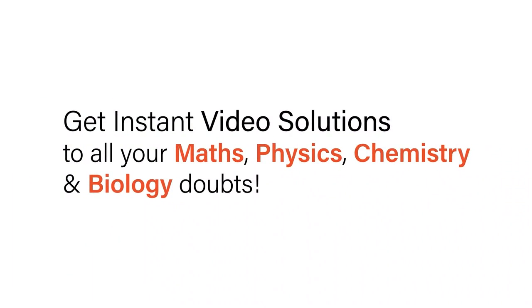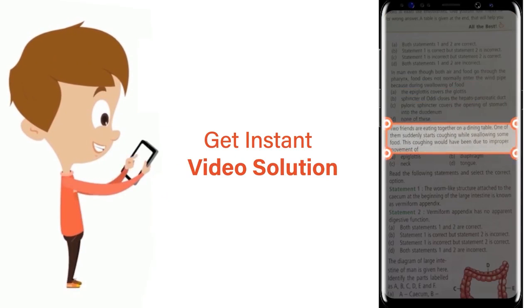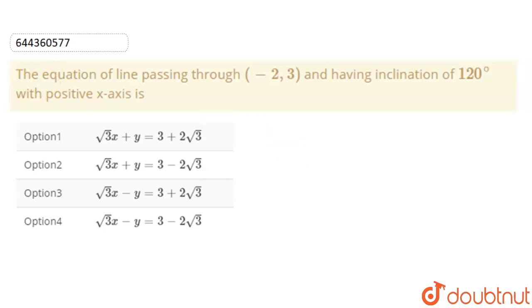With Doubtnet, get instant video solutions to all your math, physics, chemistry, and biology doubts. Just click the image of the question, crop the question, and get instant video solution. Download Doubtnet app today. Today our question is: the equation of a line passing through the point (-2, 3) and having inclination of 120 degrees with positive x-axis.